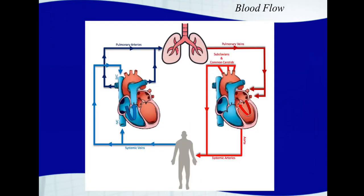Let's talk about how blood flows through the heart and through the body one more time. Starting at the lungs: blood leaves the lungs with oxygen in the pulmonary veins. This is the only time that oxygenated blood will be inside of a vein — the pulmonary veins are the only veins in the body that carry oxygen. They take oxygenated blood to the left atrium.